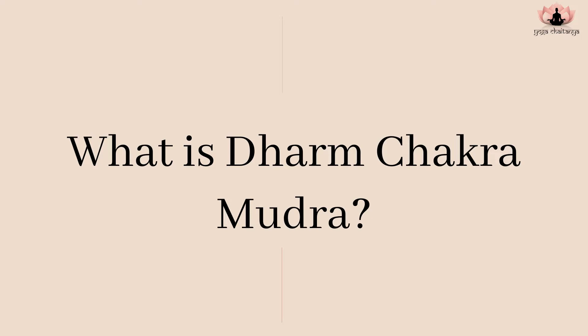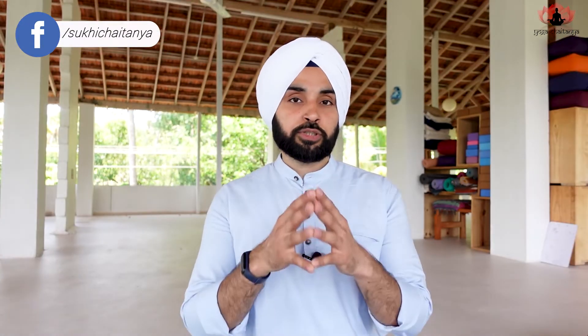What is Dharam Chakra Mudra? The Sanskrit word Dharam Chakra is a combination of two words: Dharam and Chakra. The meaning of Dharma is the divine law or the law of nature, and Chakra means wheel. So Dharam Chakra means wheel of divine law or the wheel of Dharma. Dharam Chakra symbolizes Kal Chakra, which refers to time cycles. Bhagavan Buddha gives his first discourse in Dharam Chakra Mudra after his enlightenment.